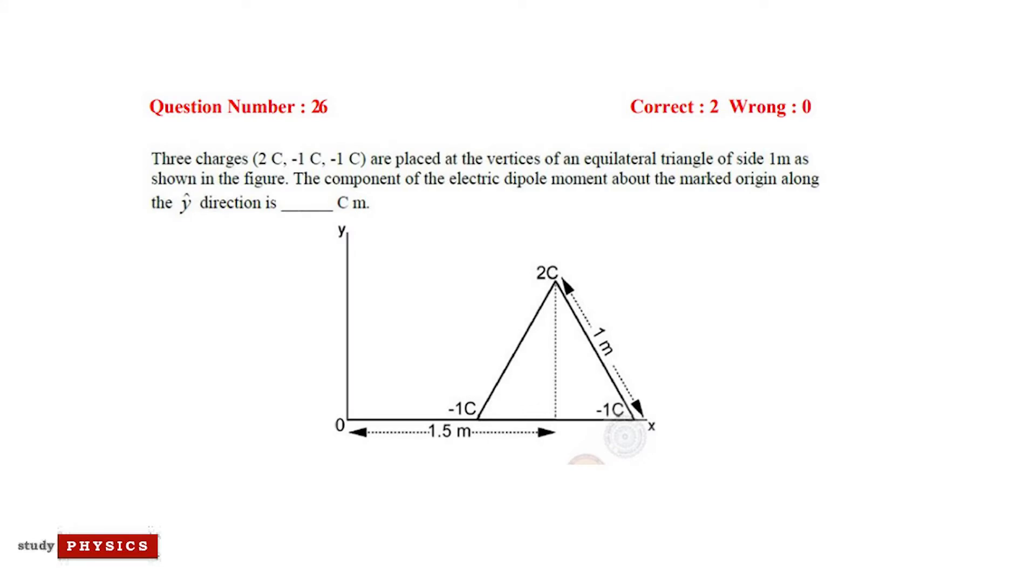Now question number 26: three charges 2 coulomb, minus 1 coulomb, and minus 1 coulomb are placed at the vertices of an equilateral triangle of side 1 meter as shown in the figure. The component of the electric dipole moment about the marked origin along the y direction is?